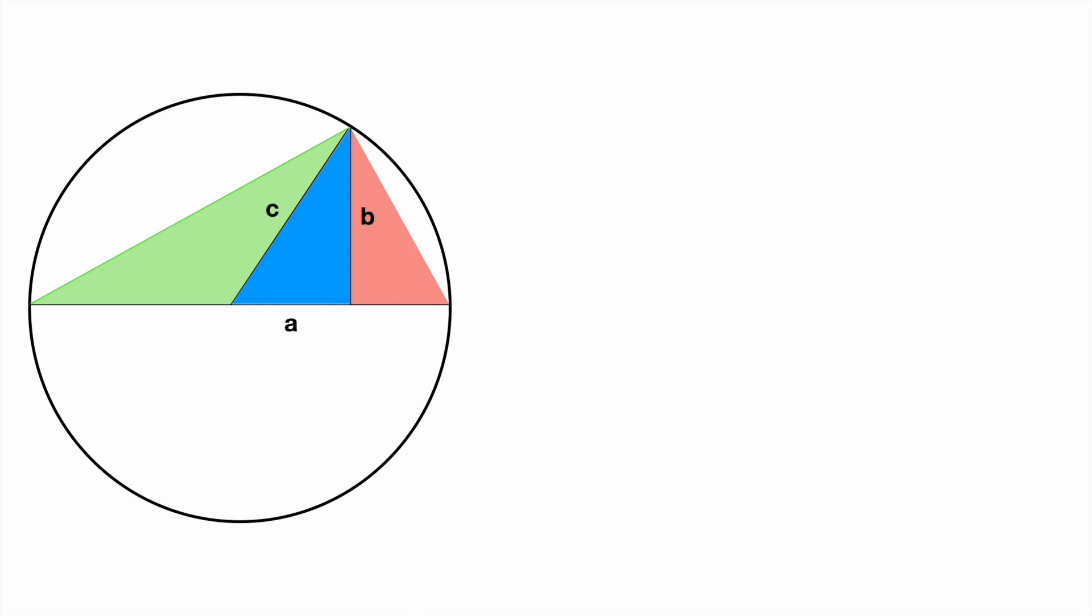We can see on the left triangle that it has two side lengths of length c or the radius, making this an isosceles triangle. This means it has two of the same angles, which we will call x.